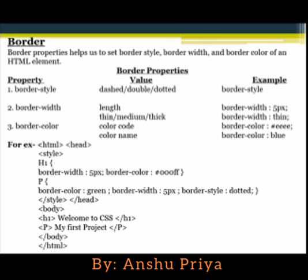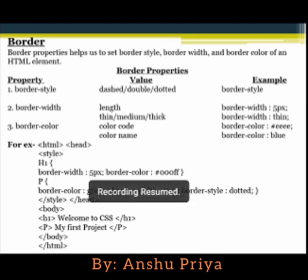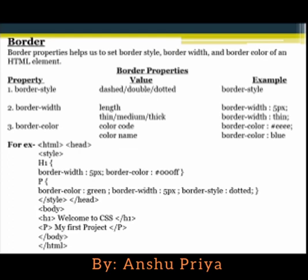For border color, as a value you have to provide a color code or color name. Here you can see an example for border color property. In the example, HTML tag starts, head tag, then style tag, then heading one tag with border-width set to 5 pixels and border-color with a color code or name. Then paragraph tag with border-width and border-style set accordingly.